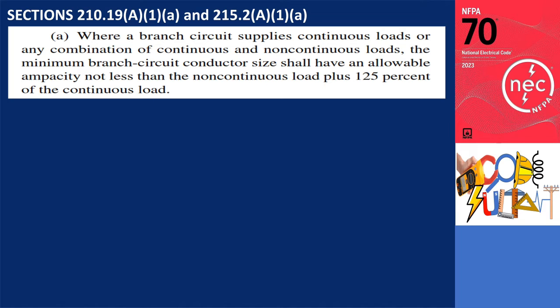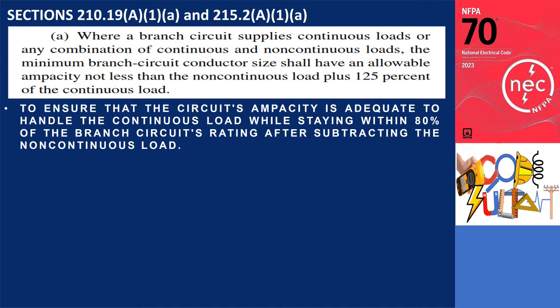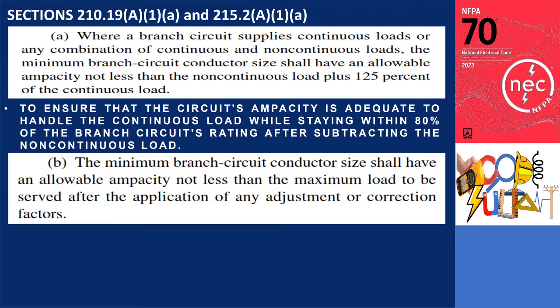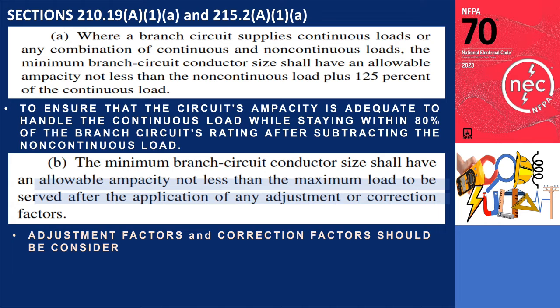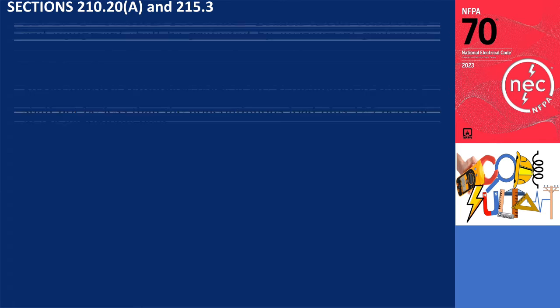Going back to Sections 210.19A1A and 215.2A1A, the intention behind this rule is to guarantee that the circuit's ampacity is adequate to handle the continuous load while staying within 80% of the branch circuit's rating after subtracting the non-continuous load. It is worth emphasizing that the rule also accounts for the interaction between the wire and its surroundings. Adjustment factors for ambient heat or mutual conductor heating should be considered when determining the resulting ampacity. However, the resulting ampacity must remain equal to or greater than the load, regardless of whether it is continuous or not.